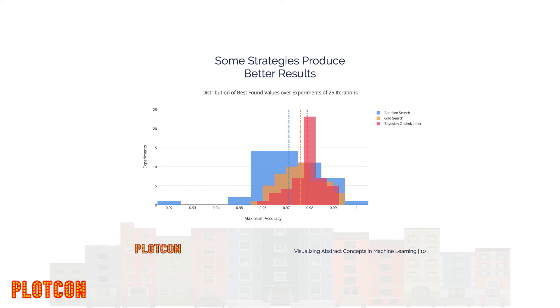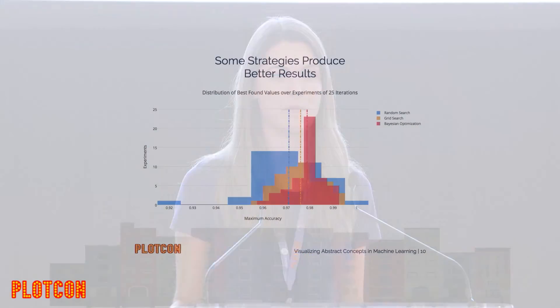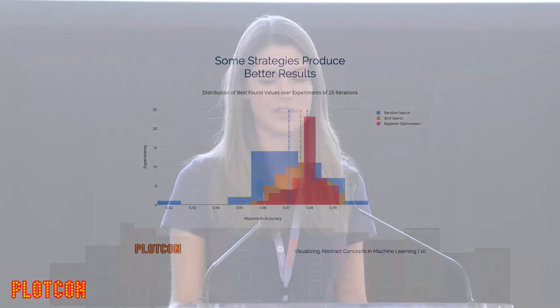If you're interested in doing this on your own, you would run 50 optimization experiments for your model, optimize the hyperparameters 50 times, then build up a histogram where you look at the maximum performance achieved on every optimization experiment. You draw a dashed line for the mean, and you can start to get a sense of the ordering of how the strategies might be performing. For those interested, the data isn't actually normally distributed, so we use a Mann-Whitney U test to get a sense of statistical significance of these results.